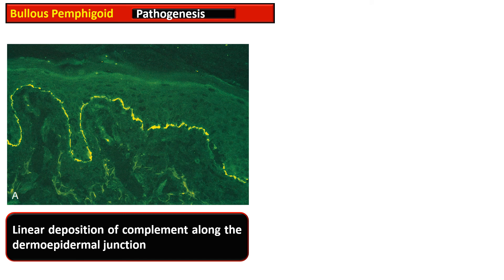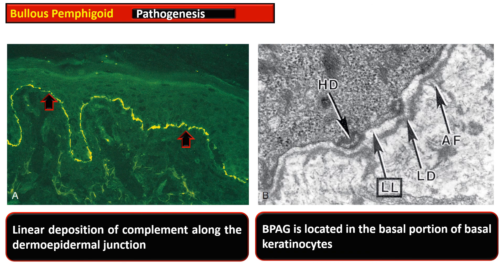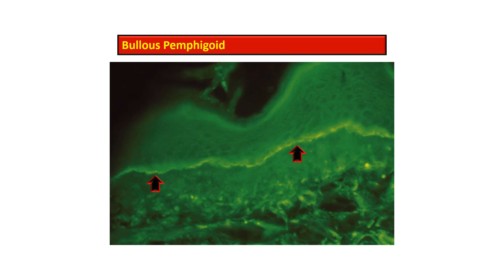On immunofluorescence, bullous pemphigoid is marked by linear deposits at the dermoepidermal junction. Ultrastructurally, in electron microscopy, the bullous pemphigoid antigen is located within the hemidesmosome that attaches the basal keratinocyte to the lamina lucida of the basement membrane zone. When these hemidesmosomes are detached, blister formation occurs at the level of the lamina lucida. This photomicrograph shows the immunofluorescence exhibiting linear deposits along the dermoepidermal junction.